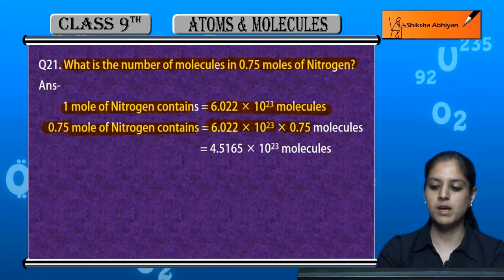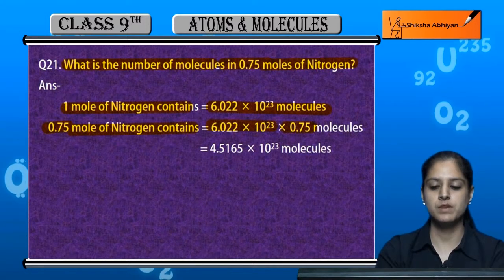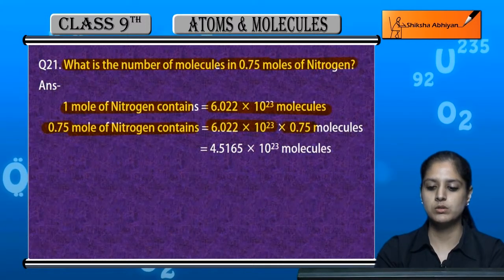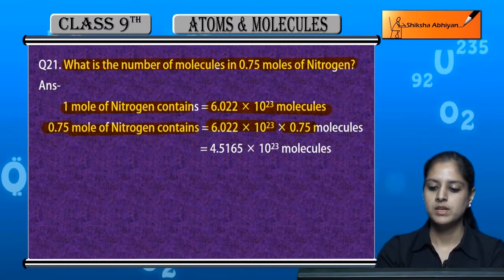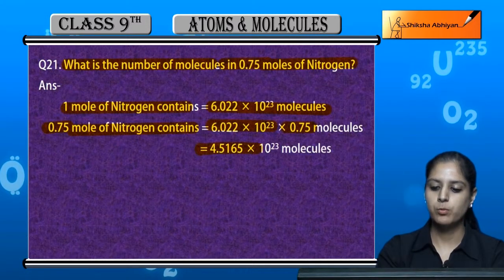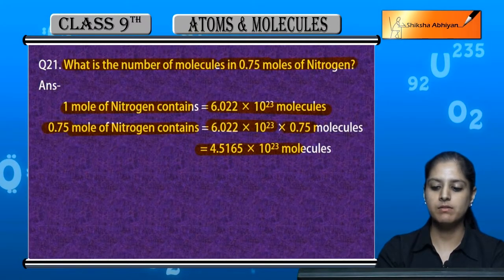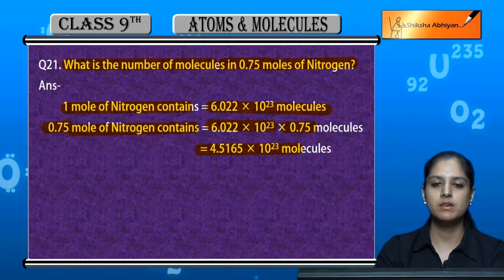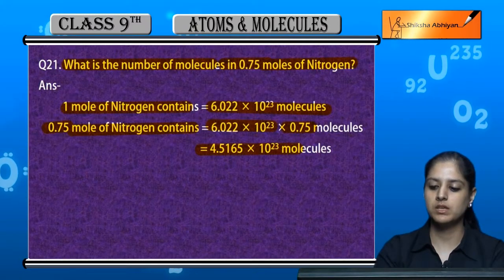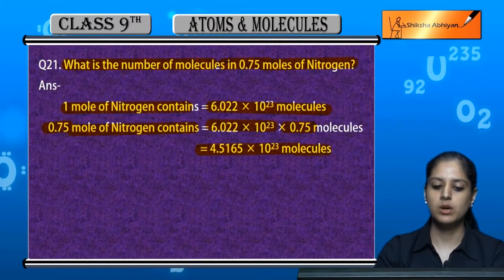That is, Avogadro's number multiplied by 0.75 equals 4.5165 × 10²³ molecules.